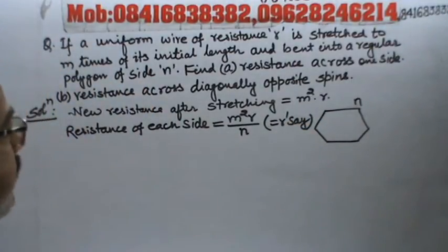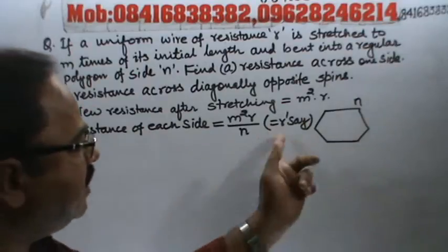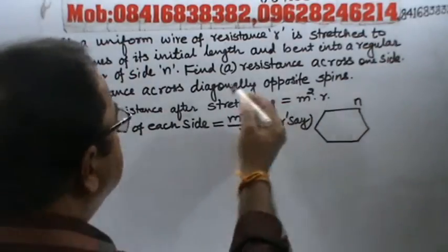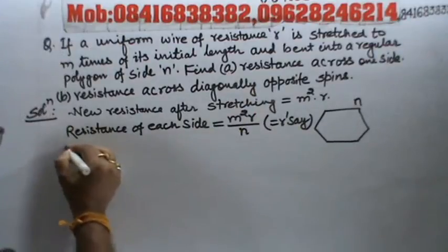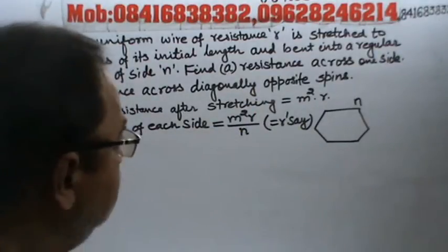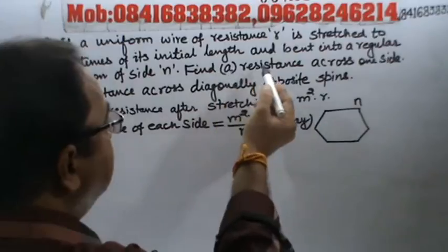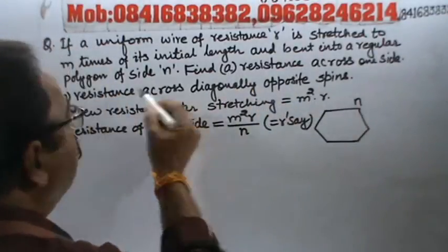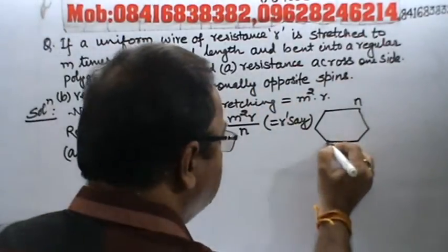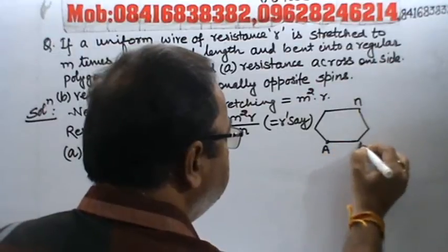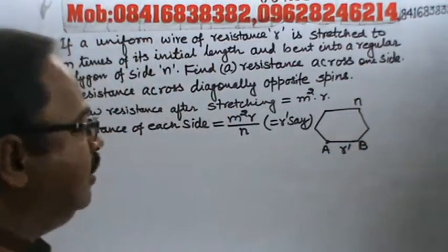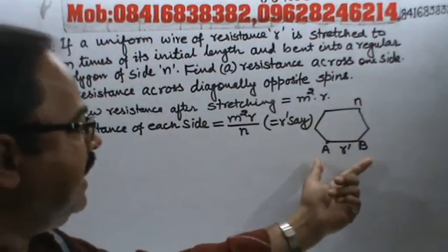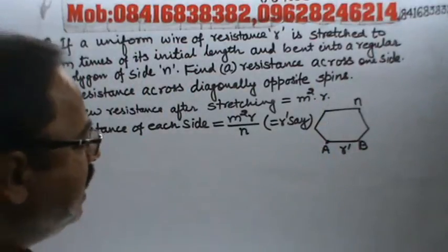Now, part A of the problem. See, part A is resistance across one side. Suppose, this is A, and this is B. Now, this is r dash. We have to calculate the resistance across. Right? So, if suppose this resistance is r dash, then remaining how much will be? N side ka polygon hai.